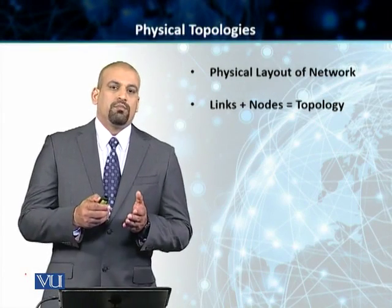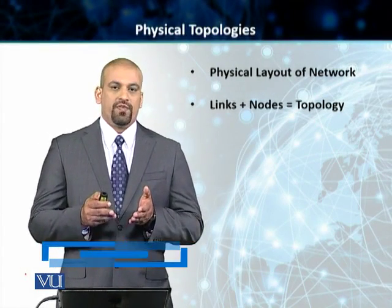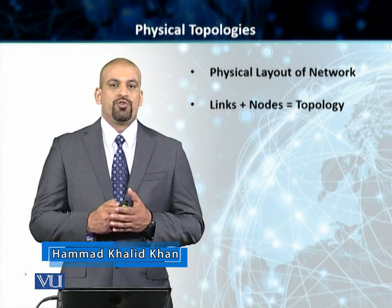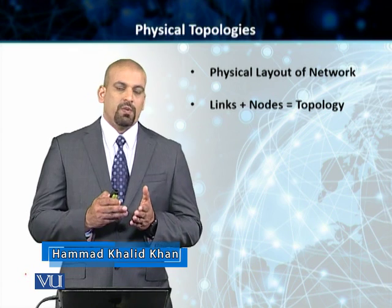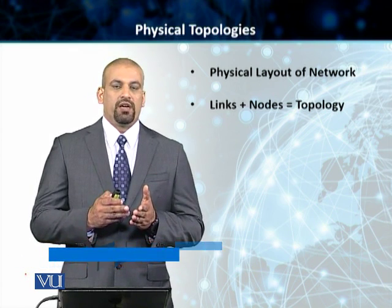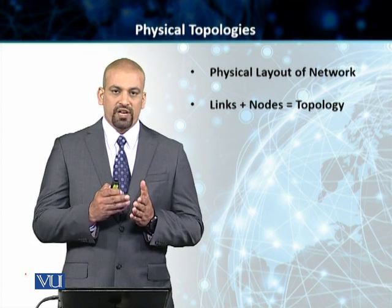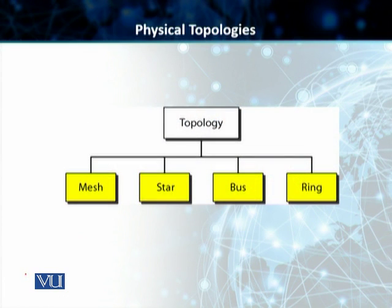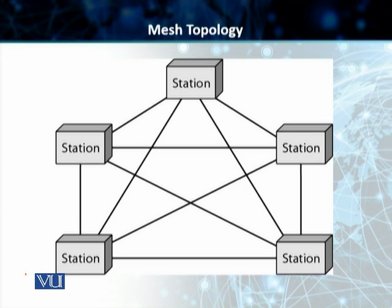Students, we have already discussed the first of the four topologies that we spoke about, which is the mesh topology. As you can see, the mesh topology has got a dedicated link for every single node and the neighboring node to connect it. A five-station, five-node mesh network requires 10 full duplex links.